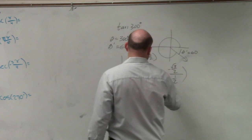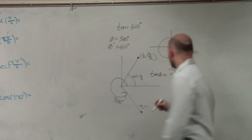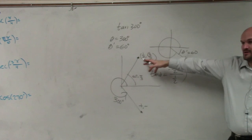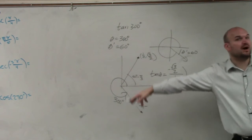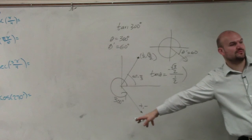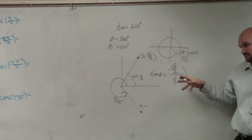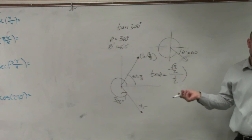Tangent of theta is equal to y over x. But do you guys see how I use the reference angle to find my coordinate points? But then I use the quadrant that it lies in to find which is positive or negative. Now I just need to simplify this. OK? I've done a lot of these examples.